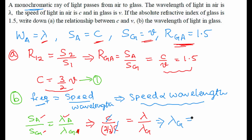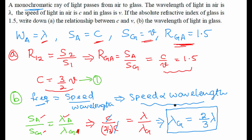Cancelling c and solving, we get the wavelength in glass equals 2/3 lambda. So the wavelength of light in glass is 2/3 lambda.